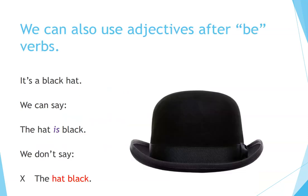We can also use adjectives after 'be' verbs. For example: 'It's a black hat.' We can say 'The hat is black.' We don't say 'the hat black.'